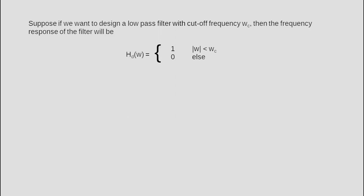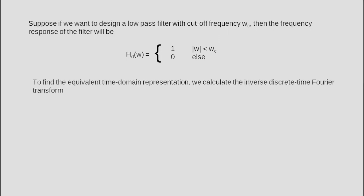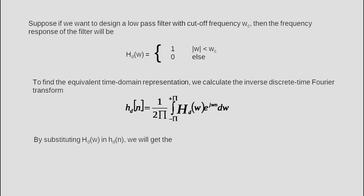Suppose we want to design a low-pass filter with cutoff frequency ωc. The frequency response of the filter will be: H_D(ω) = 1 for |ω| < ωc, and 0 for everything else. To find the equivalent time-domain representation, we calculate the inverse discrete-time Fourier transform, given as H_D(n) = (1/2π) ∫_{-π}^{π} H_D(ω)·e^{jωn} dω. Substituting H_D(ω), we get H_D(n) = (1/2π) ∫_{-ωc}^{+ωc} e^{jωn} dω. Solving this, we get sin(nωc)/(nπ), which is also called the sinc function.